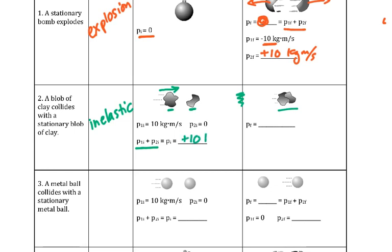we get a positive 10 for our total initial momentum. And then we know, based on the law of conservation of momentum, that the final total momentum must equal that. And so our Pf has to also be positive 10 kilogram meters per second.